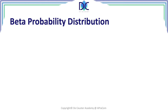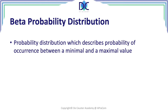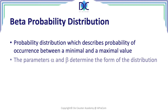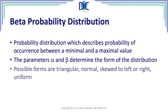We also have the beta probability distribution. This is the distribution giving the probability of occurrence between a minimum and a maximum value. Where the normal distribution goes from minus infinity to plus infinity, the beta distribution is limited between a minimum and a maximum. It contains two form factors, alpha and beta, and depending on their values, the beta distribution can take different forms — including triangular, normal-like, skewed left or right, or even a uniform distribution.